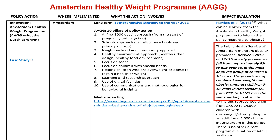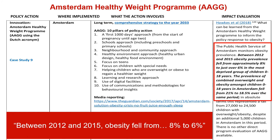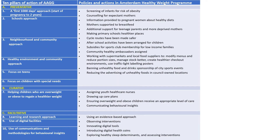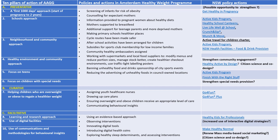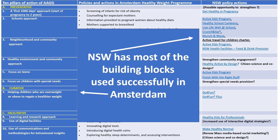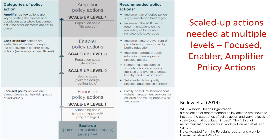Here we see the Amsterdam Healthy Weight Programme. Ten pillars of policy action are shown in the centre of the screen. We know from the impact evaluation that between 2012 and 2015 obesity rates fell from 8% to 6%. If we look at the ten pillars of action in Amsterdam and compare them to available policy actions in New South Wales, we can conclude that New South Wales has most of the building blocks used successfully in Amsterdam.